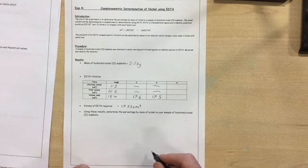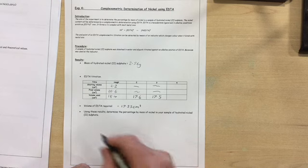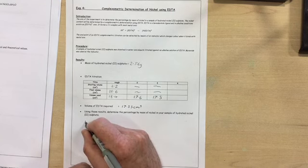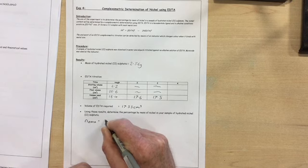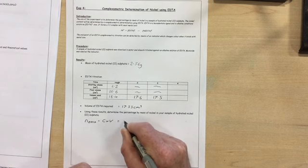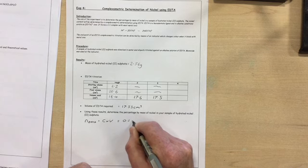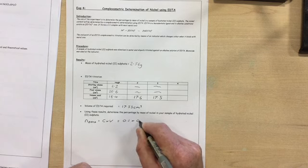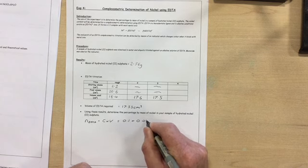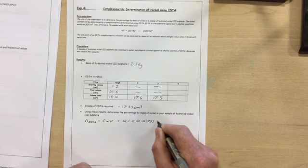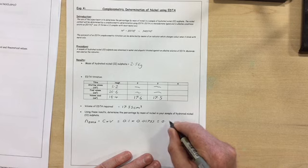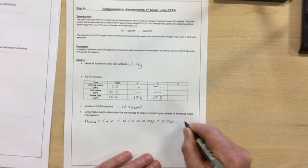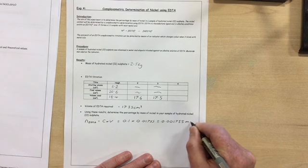Now to determine the percentage by mass of nickel in the sample. The number of moles of EDTA is the concentration of EDTA times the volume. The concentration was 0.1, the volume was 0.01755, which gave me the number of moles of EDTA as 0.001755 moles.